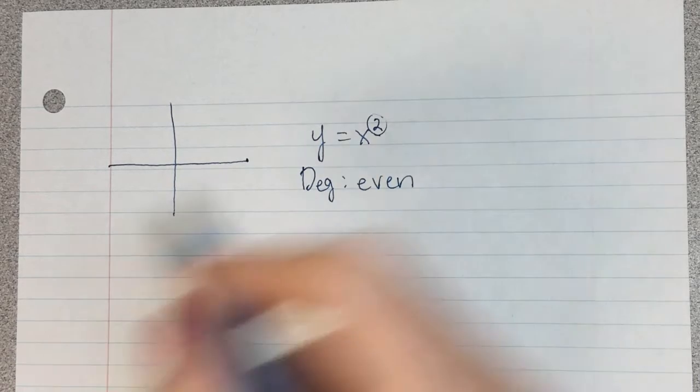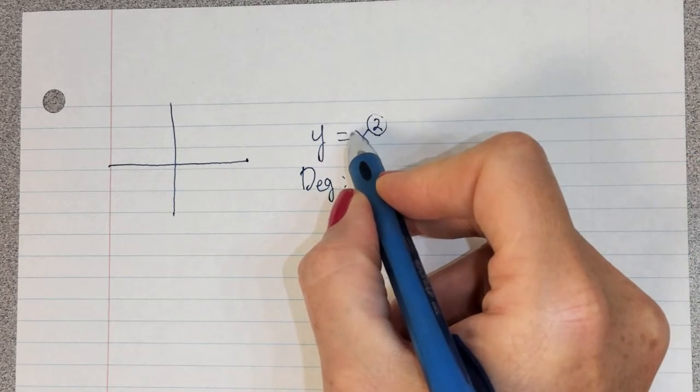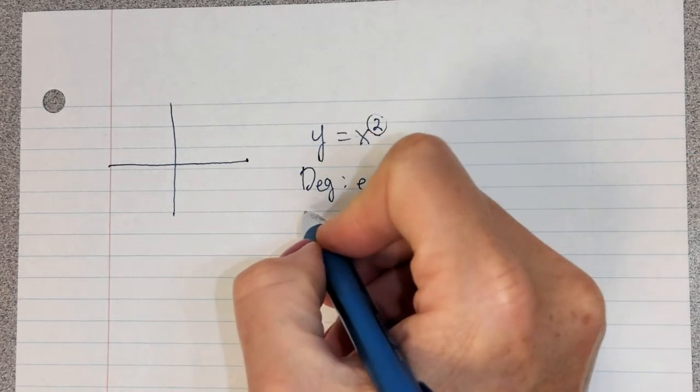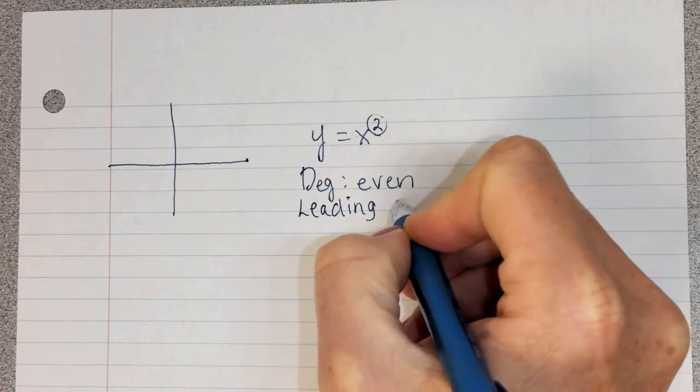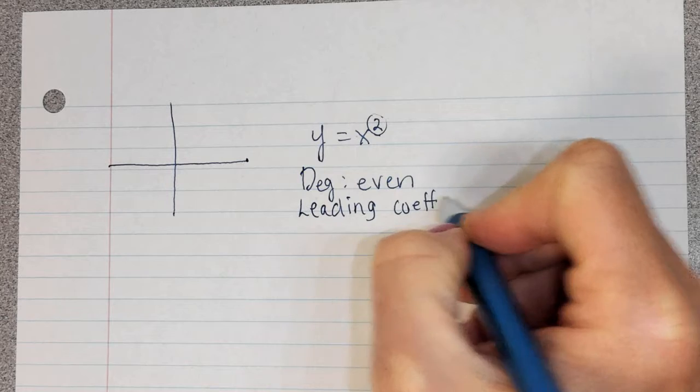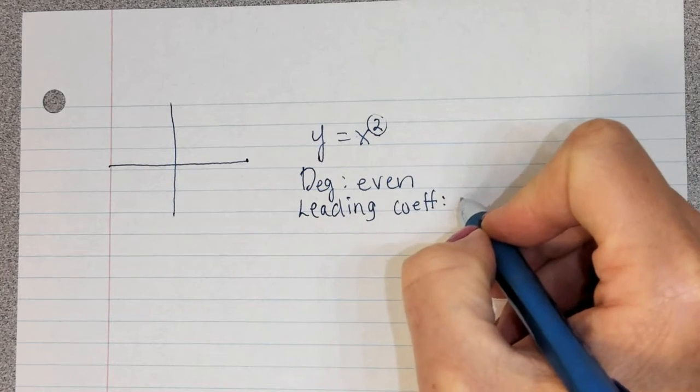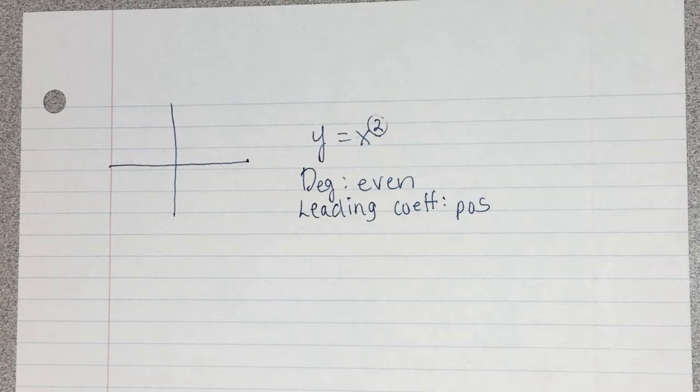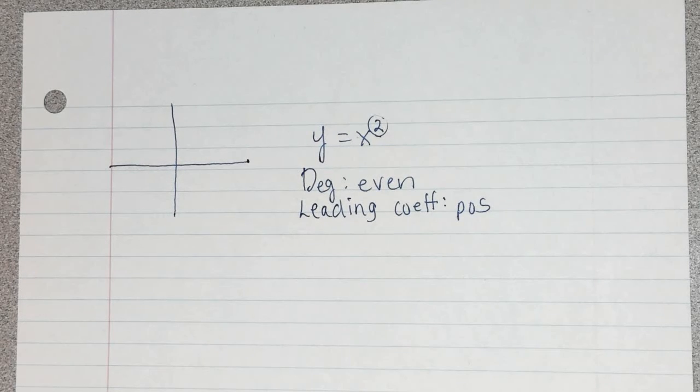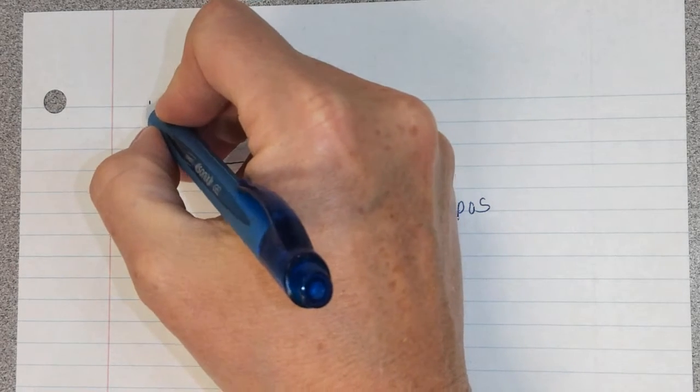So I would say then that this degree is going to be even. We would also say that the leading coefficient is whatever is right in front of this x squared. So the leading coefficient is positive. You all should know what that kind of graph looks like. That's just going to be a parabola that opens up.